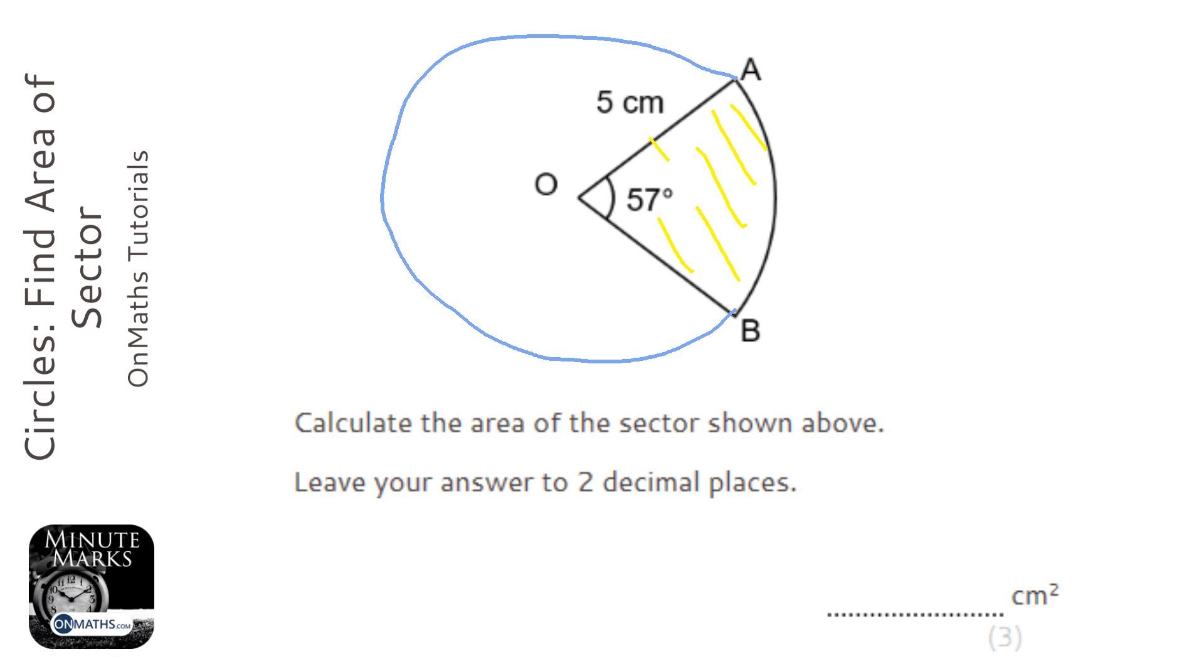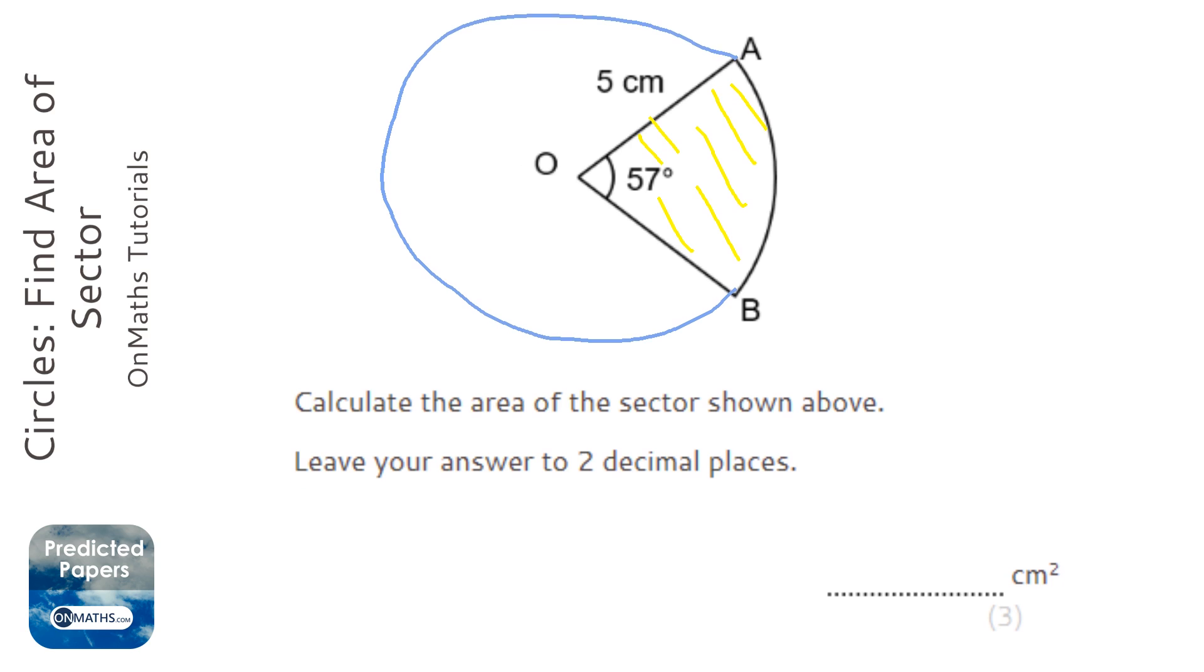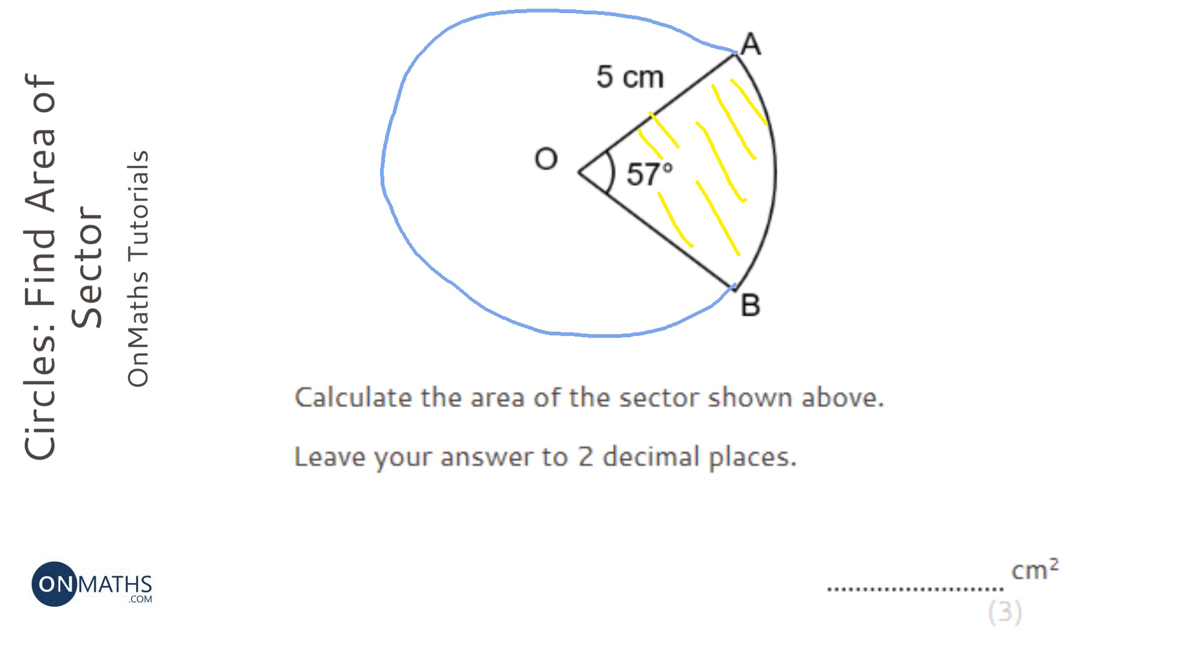...here which I'm going to shade in yellow is called a sector. A sector is a slice of the pizza of the circle, and it asks us for the area of it. So I'm going to start off by working out the area of the sector.